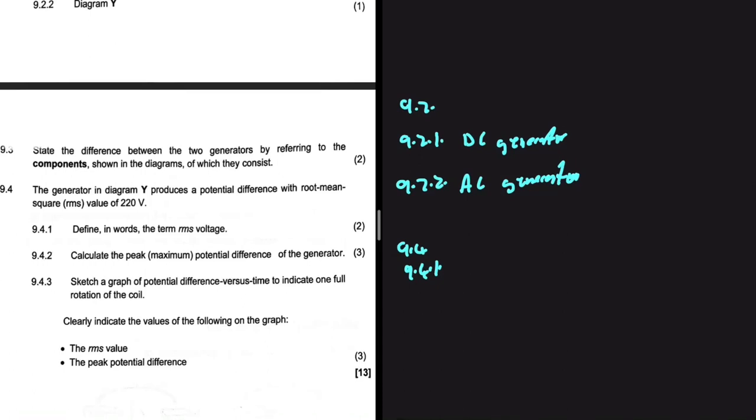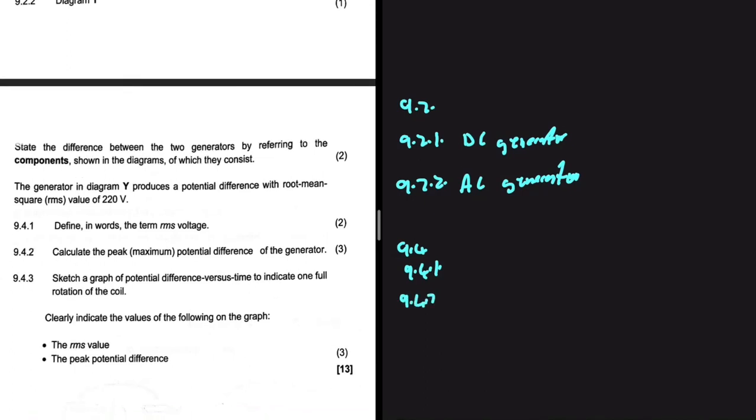Question 9.4.2: calculate the peak maximum potential difference of the generator. We're looking for V_max, but we know that V_rms equals V_max divided by square root of 2. We have V_rms, it is 220 volts, so we're going to have V_max being equals to 220 multiplied by square root of 2. That is 311.13 volts.